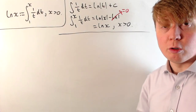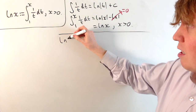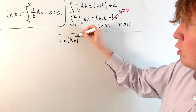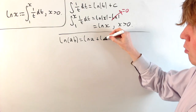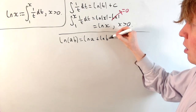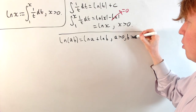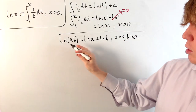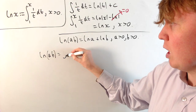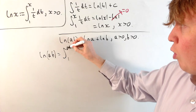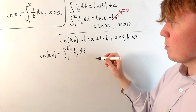Let's derive our first law of logarithms using this definition. The first one is that the logarithm of a product can be split into a sum: the logarithm of ab can be rewritten as the log of a plus the log of b, and this should be true for all values of a and b greater than 0. Starting with the left-hand side, ln(ab) is defined as the integral from 1 up to ab of 1 over t with respect to t.